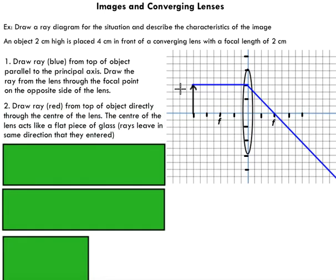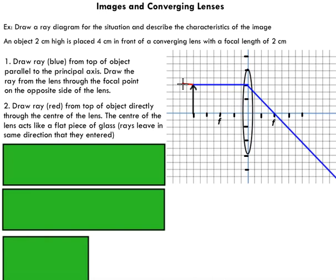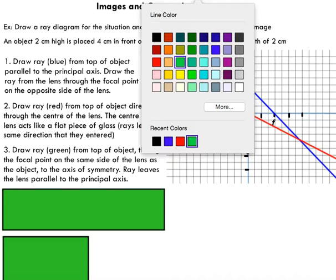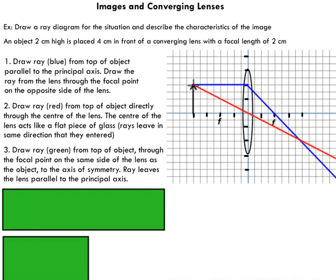Second step: take a red ray from the top of the object and pass it right through the center of the lens. Lenses are such that when a ray passes through the center, it acts like a flat piece of glass — the ray leaves in the exact same direction it entered, so it's a straight ray through the lens. For the third step, take a ray from the top of the object but this time pass it through the focal point on the object side of the lens. It strikes the lens and is refracted so it leaves parallel to the principal axis. You can see all three rays are converging into one point.